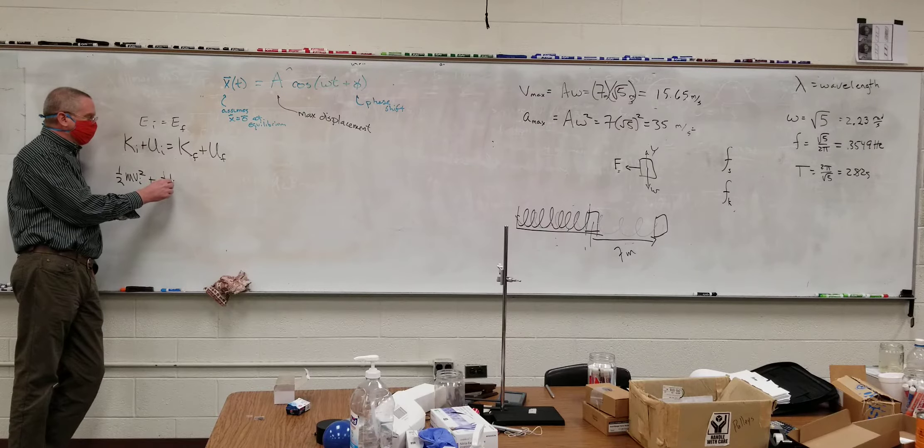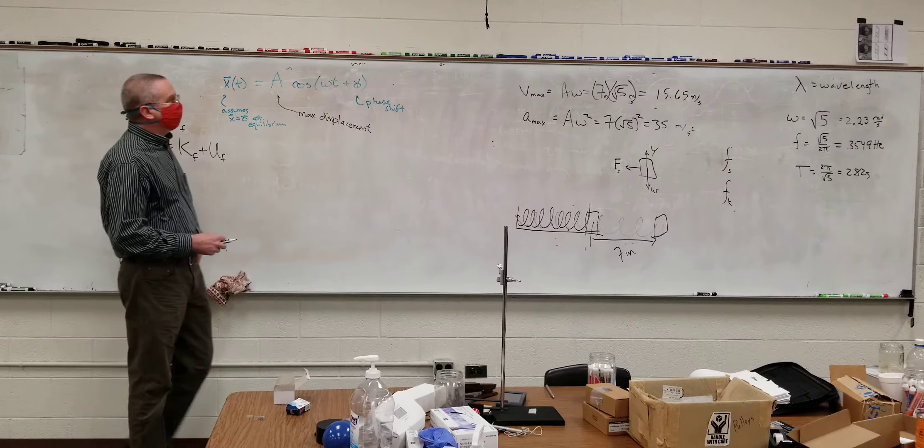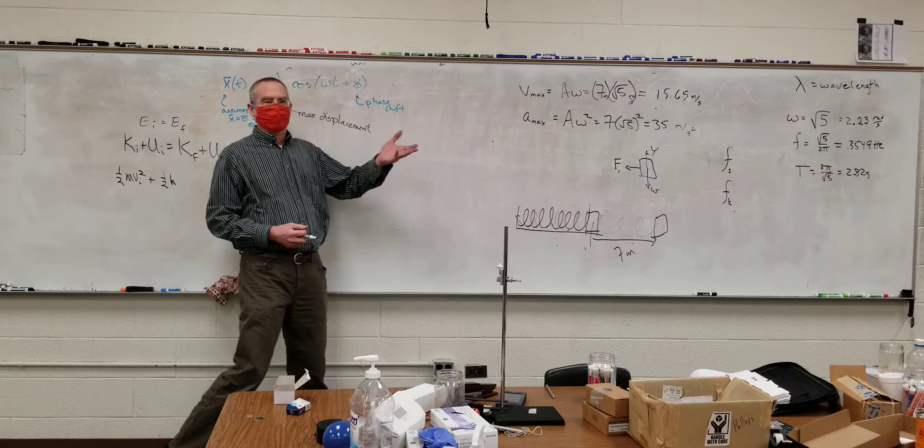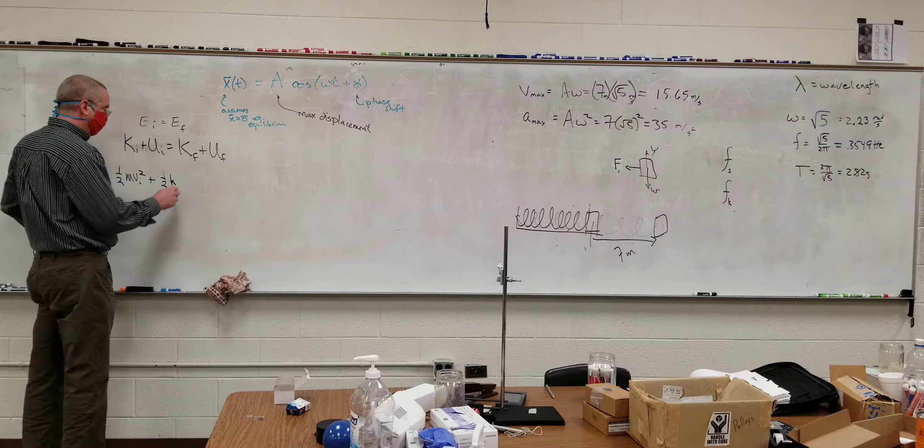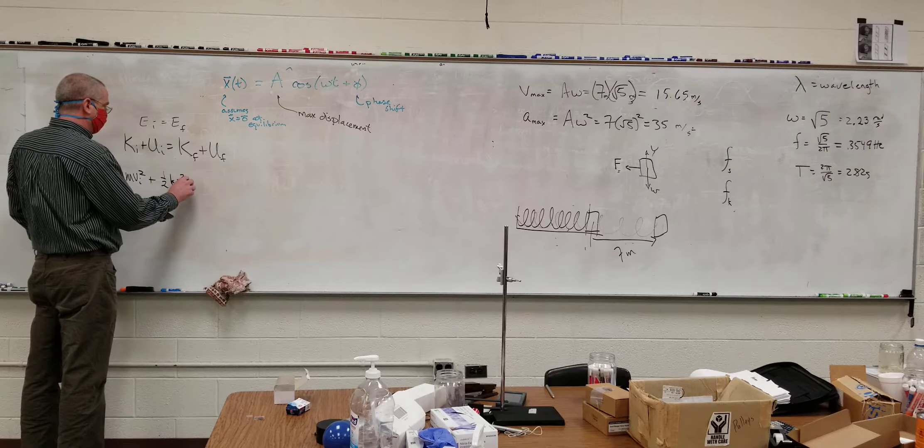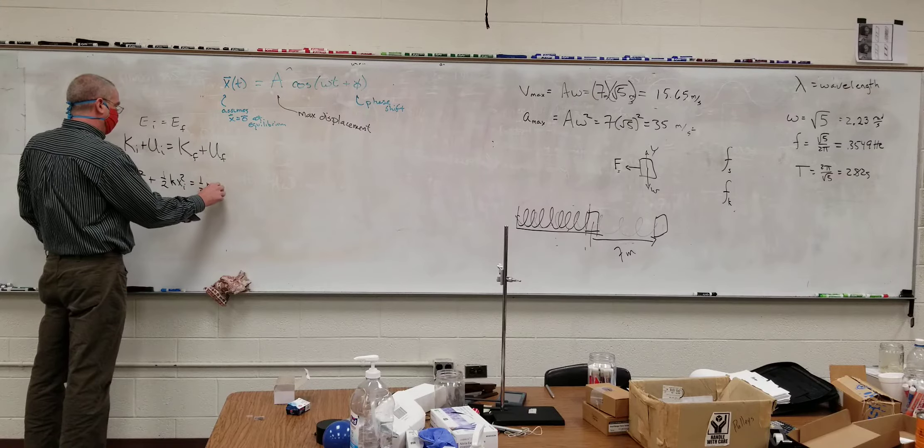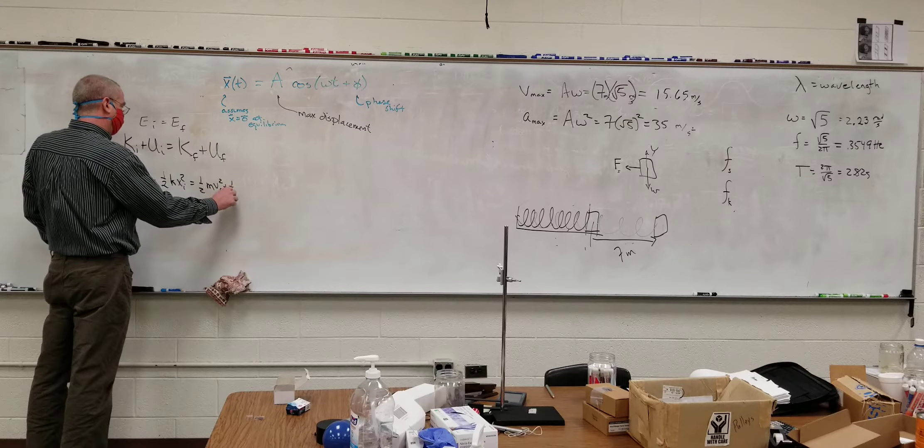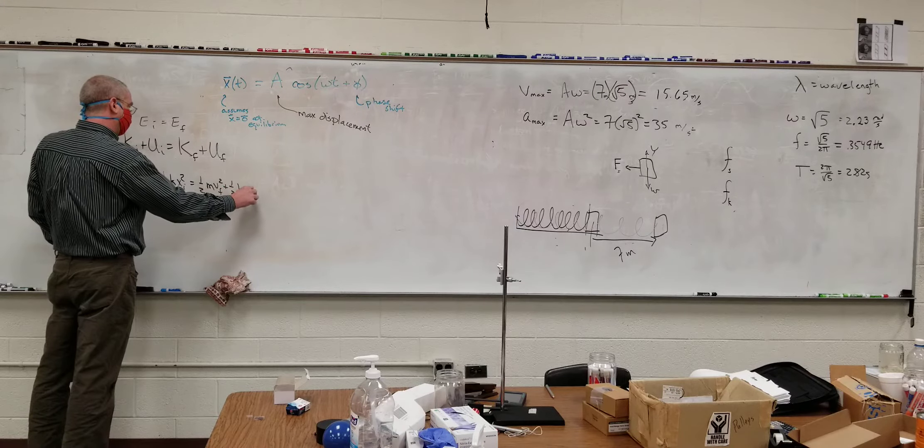In our particular case, in this particular problem here, since I defined our position using an x, I'm just going to write x squared. Initial is equal to one-half Mv final squared plus one-half kx final squared.